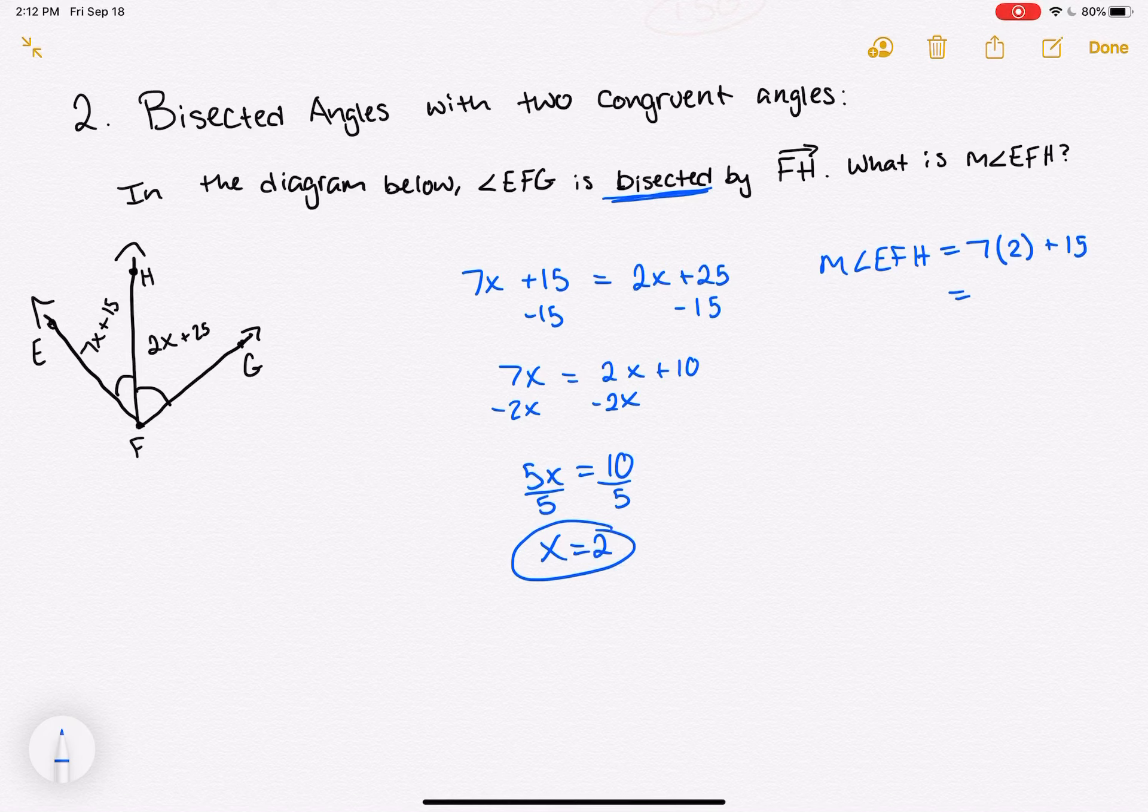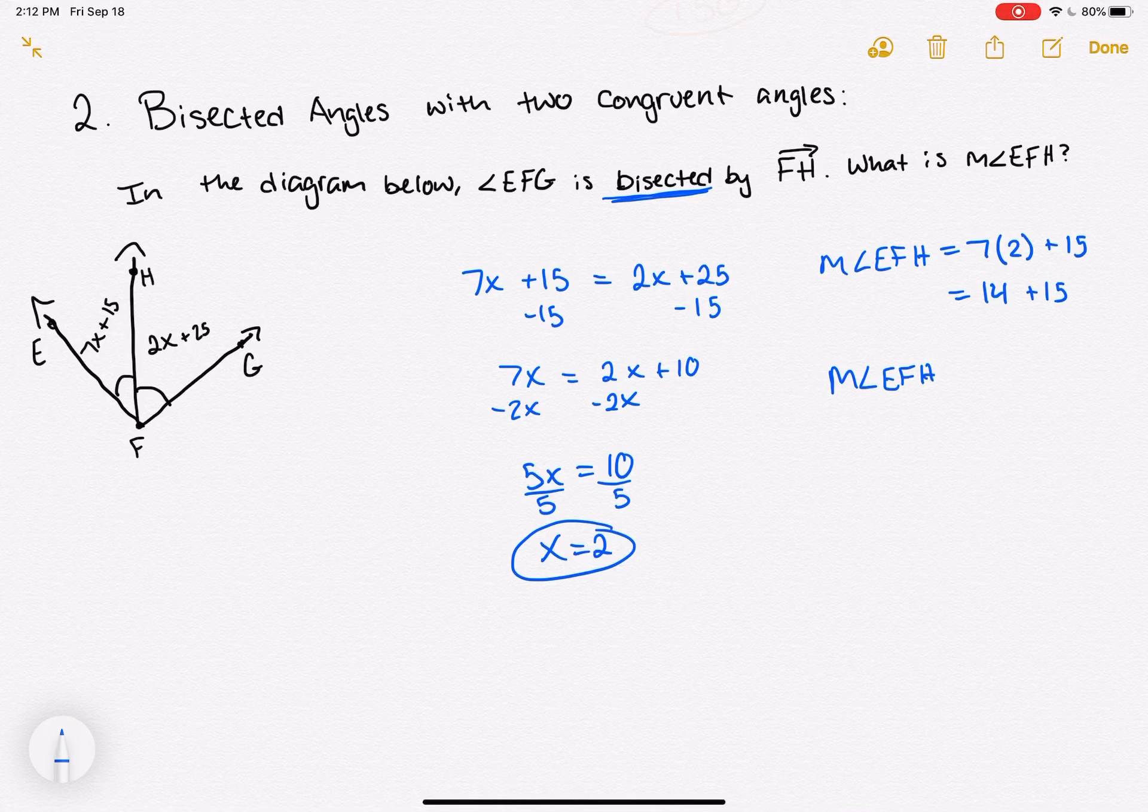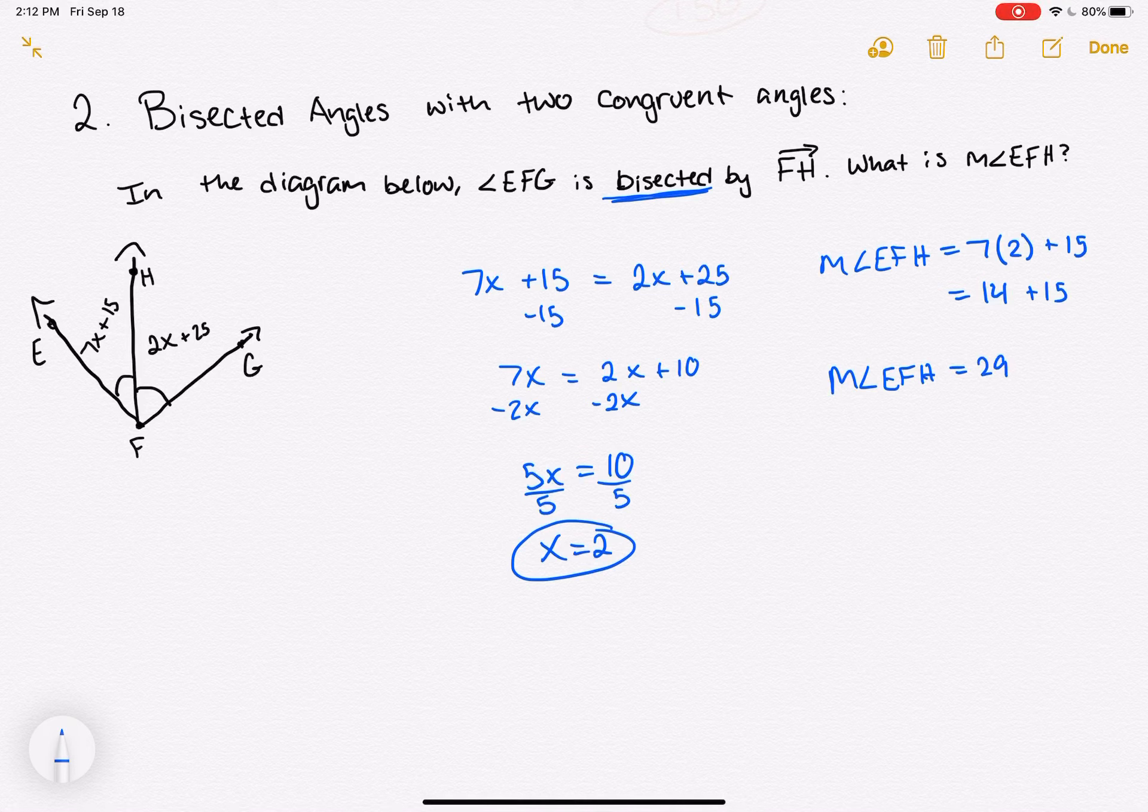7 times 2 is 14. I'm going to add 15 to that, which means that the measure of angle EFH is equal to 29 degrees.